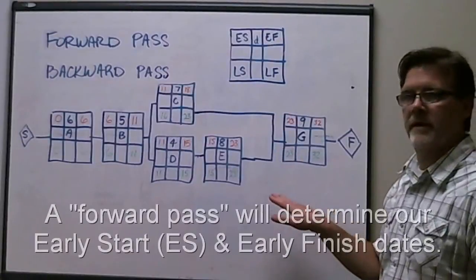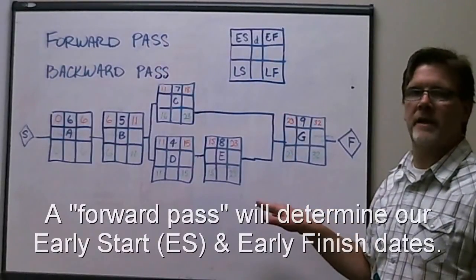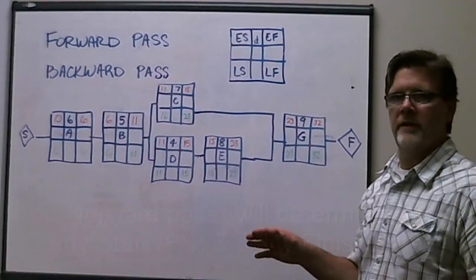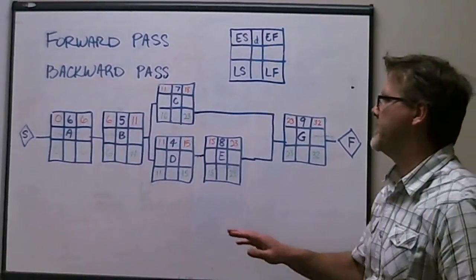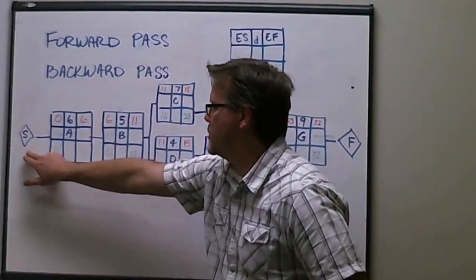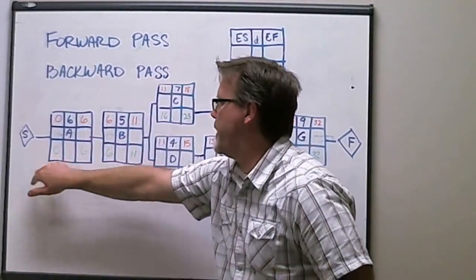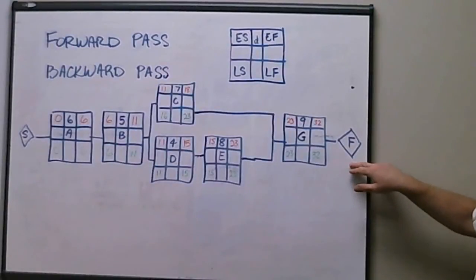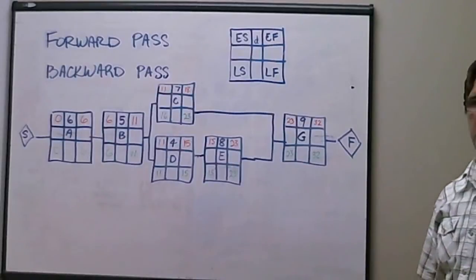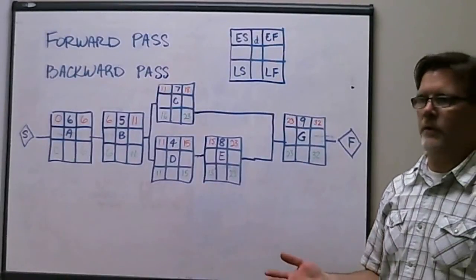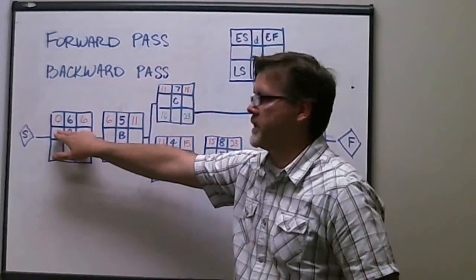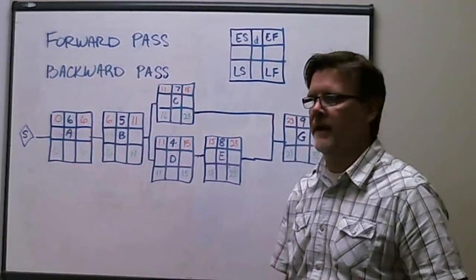So as you can see on the network diagram that I have here, I've already done the calcs, but I do want to walk you through the forward pass, which is essentially the pass from the start, which I show as a milestone start, a left to right pass from the start all the way to the end here, which is the finish diamond, as is shown. So the first thing that we do is, when I do my network diagrams, I always start with an early start of the first activity, in this particular case, A, of zero.